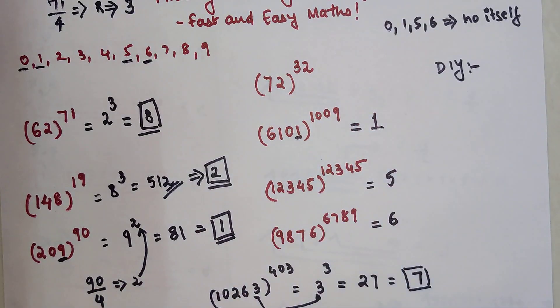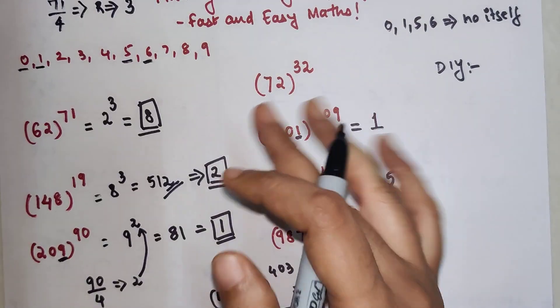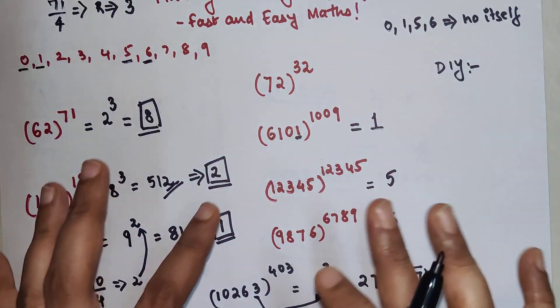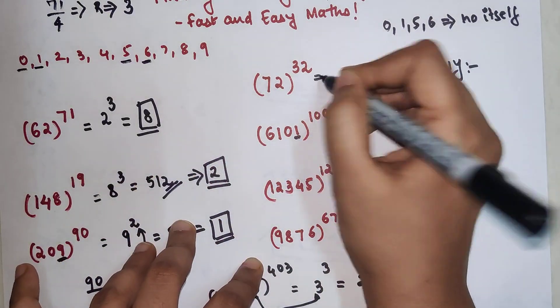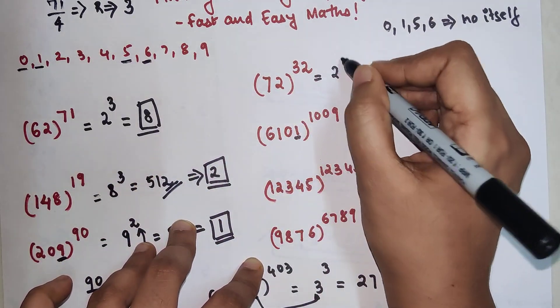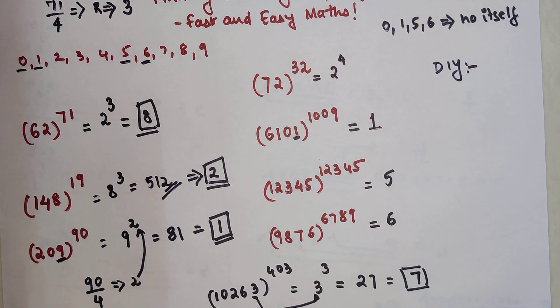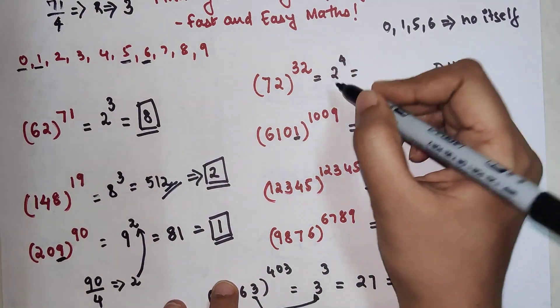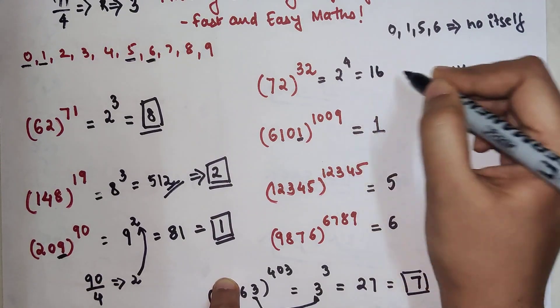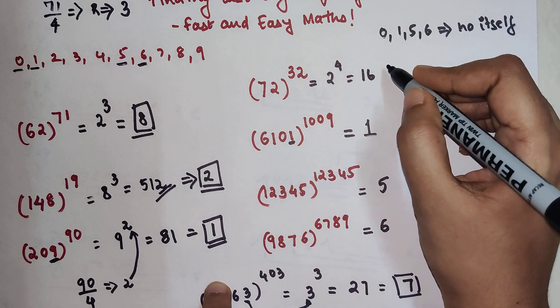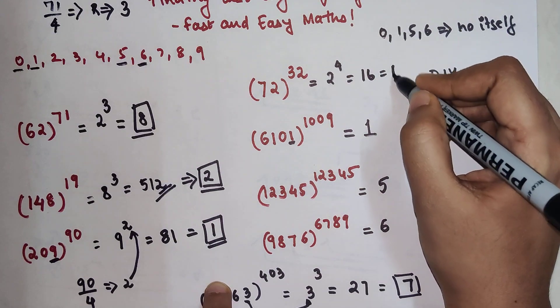Now you might be wondering: what happens when the number is completely divisible by 4? In such a case, if you ever come across any number completely divisible by 4, then what you have to do is just put 2 raised to 4. So 2 raised to 4 is 16, so your final answer will have the unit digit as 6.